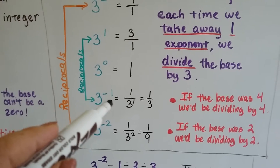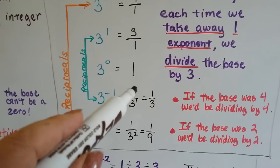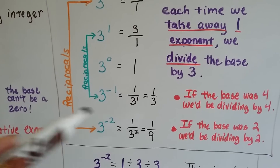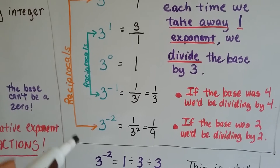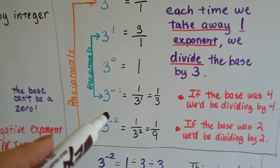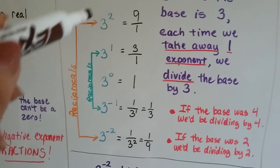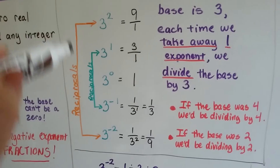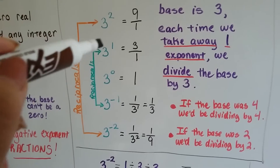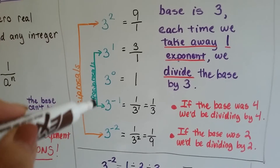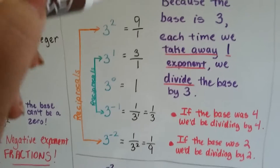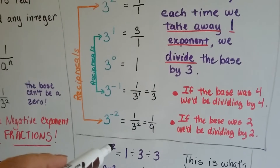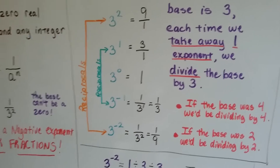3 to the negative 1 is going to be 1 3rd — it's now become a fraction. 3 to the negative 2nd is 1 9th. And these are reciprocals of each other: 9 over 1 and 1 9th are reciprocals, and 3 over 1 and 1 3rd are reciprocals. As we go to 3 to the 3rd power and 3 to the negative 3rd, those would be reciprocals.